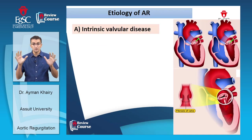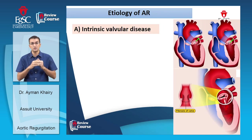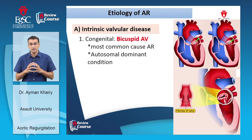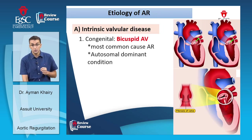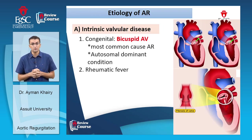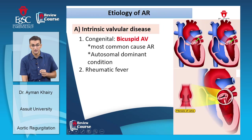The two main pathological causes of aortic regurgitation are intrinsic valvular disease or aortic root disease. Intrinsic valvular disease is caused mainly by congenital bicuspid aortic valve — where there are only two cusps instead of three — an autosomal dominant condition and the most common cause in young patients. Second, in our locality in Asia, rheumatic fever is a common cause, where the cusps become fibrotic with calcification at the apex of the valve, not the base.